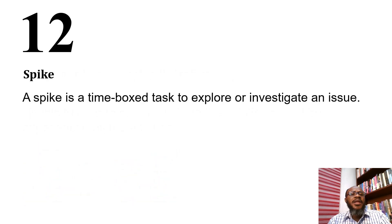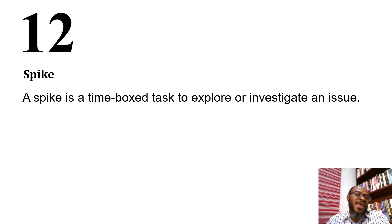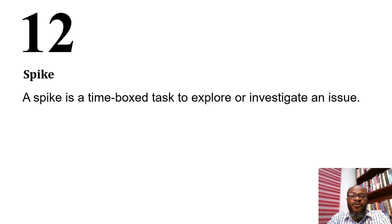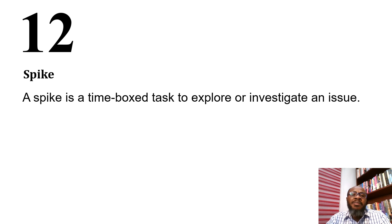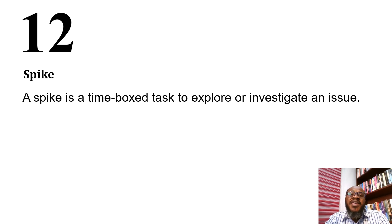A spike is a time-boxed task to explore or investigate an issue. Normally, a story card leads to a feature being created, but sometimes there is an issue or we need to estimate how long a user story will take and we don't have enough information. In that case we create a spike. A spike uses time but does not produce a feature — it exists to explore, research, or investigate, for example to create an estimate for an existing user story.